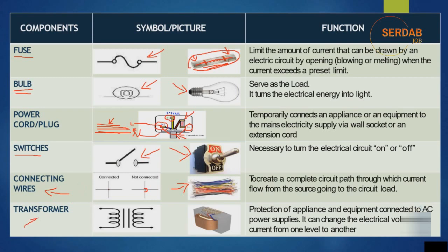Now, what about transformers? This is how a transformer looks, and this is the electrical symbol. Transformers are used for protection of appliances connected to AC power supplies. They can change the electrical voltage or current from one level to another. For example, if you have a device that works on 12 volts but you are getting 220 volts from the power socket, the transformer steps down the voltage from 220 to 12 volts.